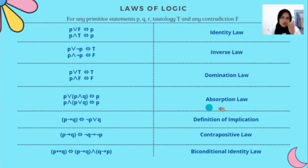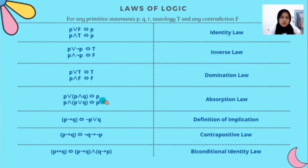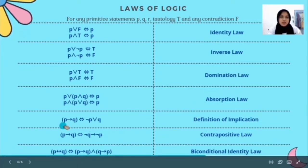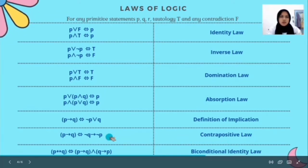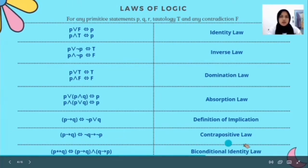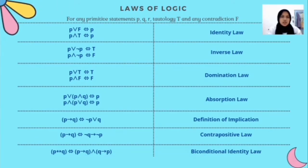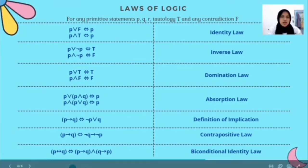Next is absorption law. It is used when P ∨ (P ∧ Q) is equivalent to P, and P ∧ (P ∨ Q) is equivalent to P. Notice that the symbols used are different, so absorption law applies. Next is the definition of implication: (P → Q) is equivalent to ¬P ∨ Q. Next is contrapositive law: (P → Q) is equivalent to (¬Q → ¬P). And the last one is biconditional identity law: (P ↔ Q) is equivalent to (P → Q) ∧ (Q → P).